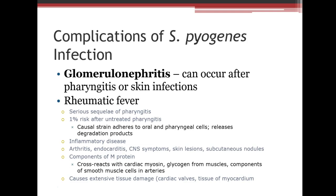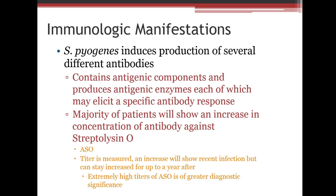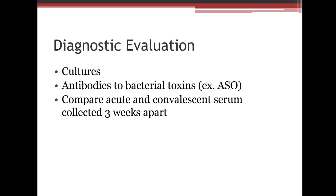Immunologically, Streptococcus pyogenes produces several antibodies. It contains an antigenic component and produces antigenic enzymes, leading us to the antistreptolysin O test (ASO). A rising ASO titer indicates recent infection, though it can remain elevated for a year. Extremely high titers are of greater diagnostic significance. We can do throat cultures, blood cultures, and compare acute and convalescent serum specimens collected three weeks apart.